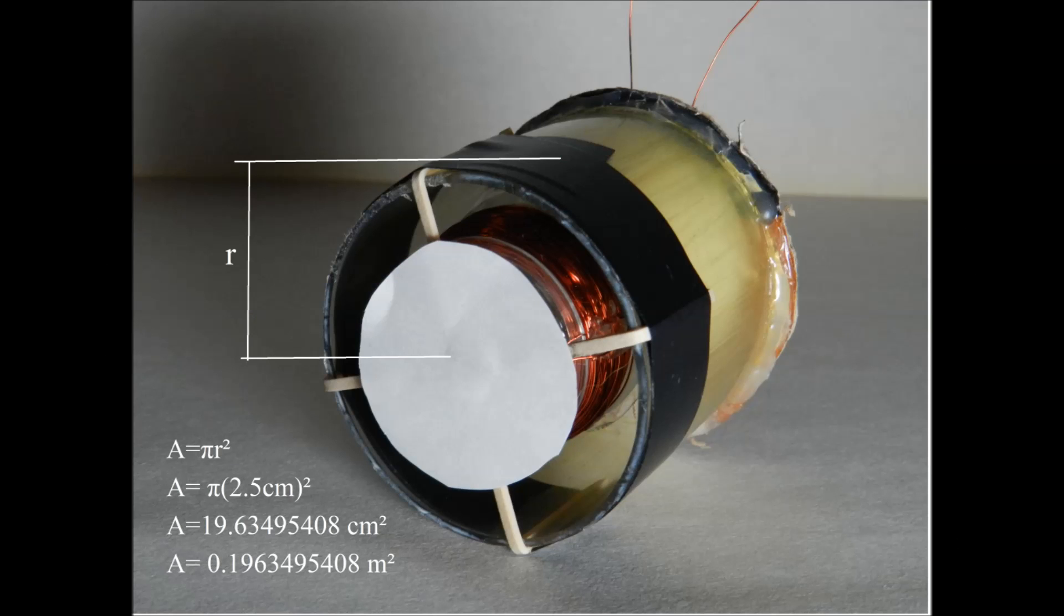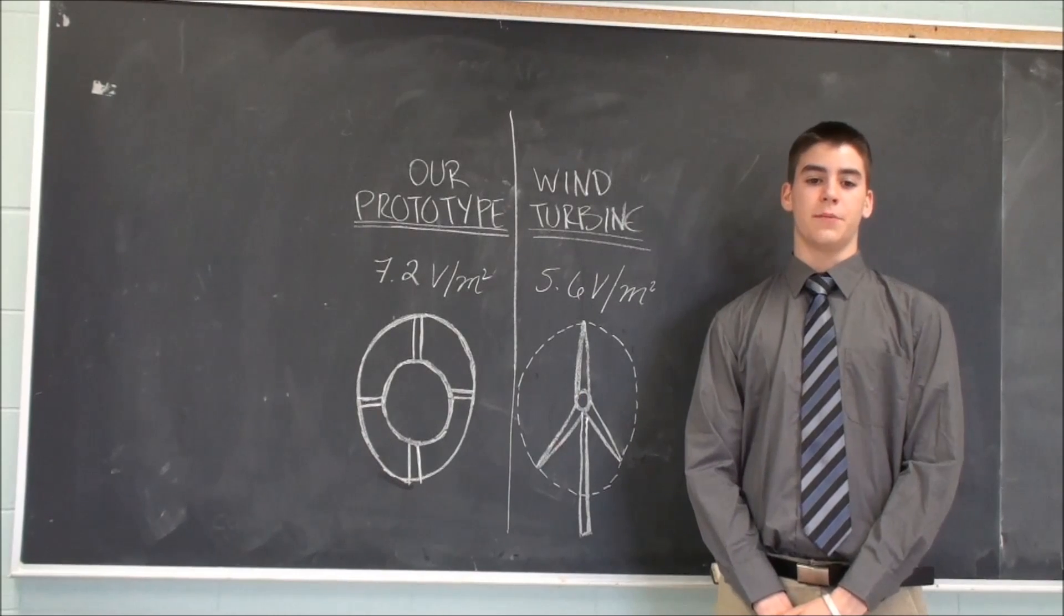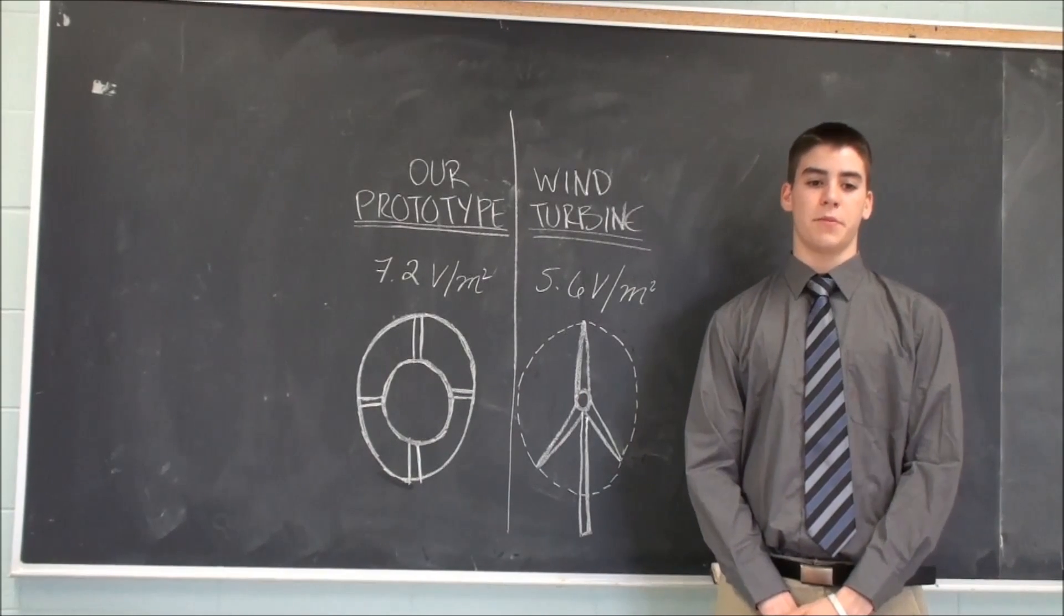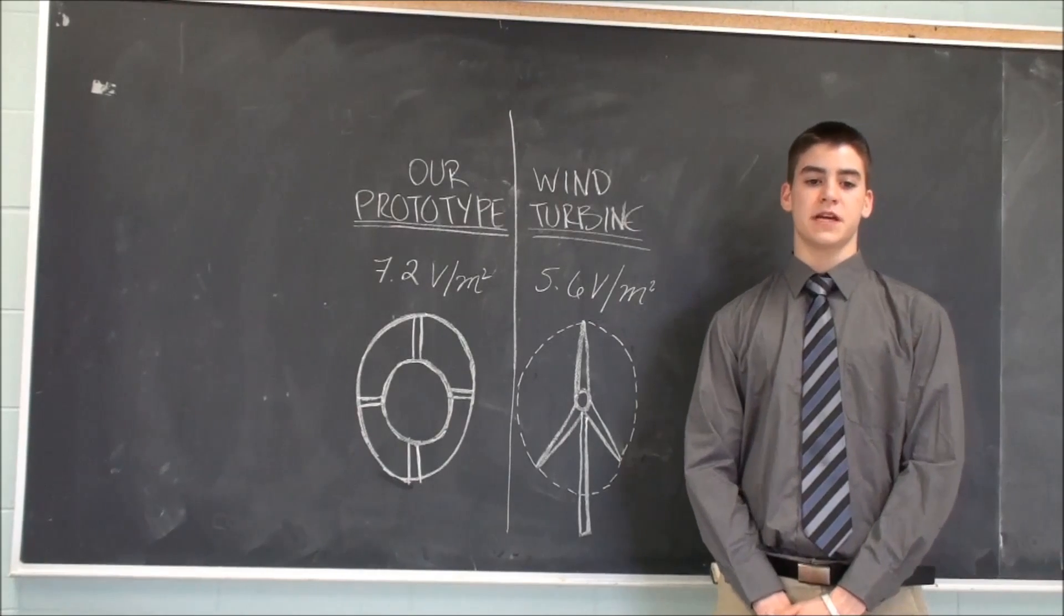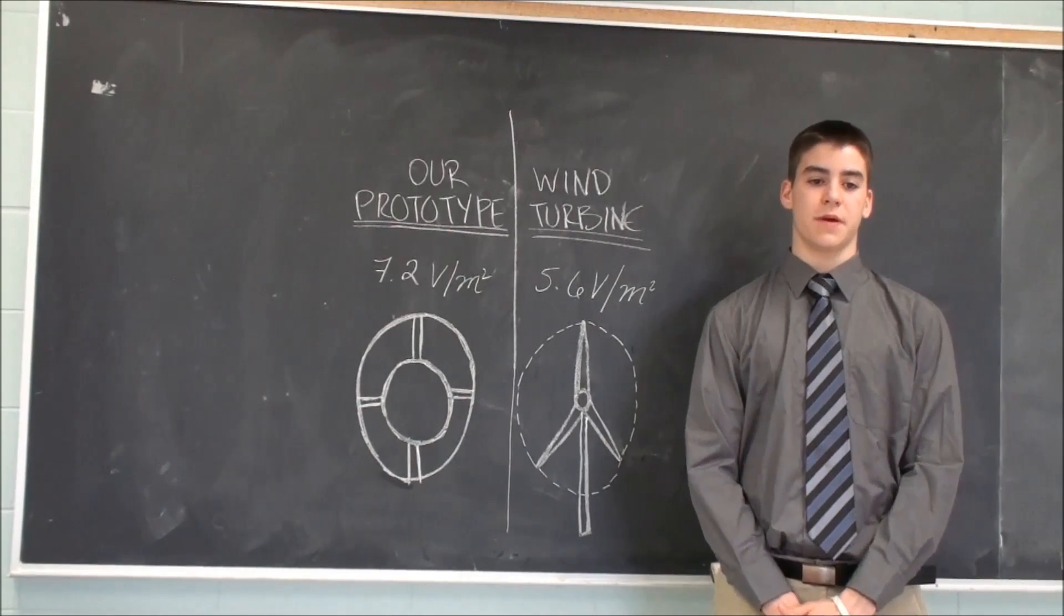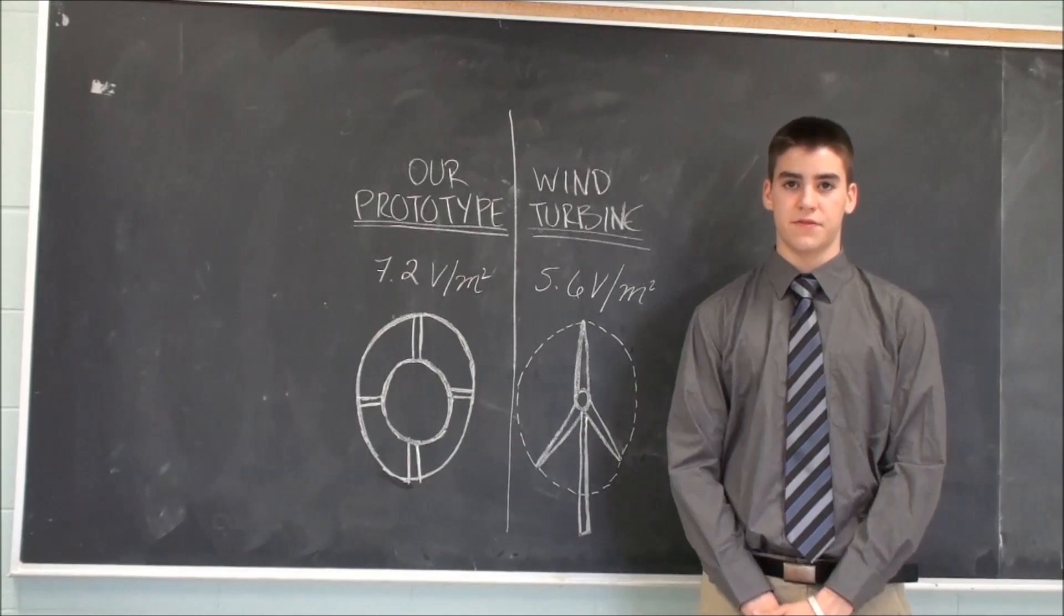we decided to compare the voltage production of our device relative to the surface area it occupies. We discovered that our prototype was producing an average of 7.2 volts per meter squared, achieving a nearly 30% greater voltage per surface area than wind turbines, which produce on average 5.6 volts per meter squared.